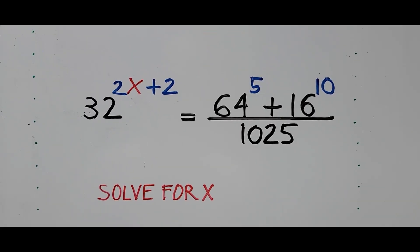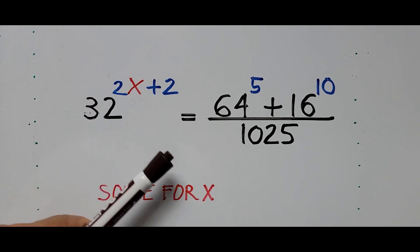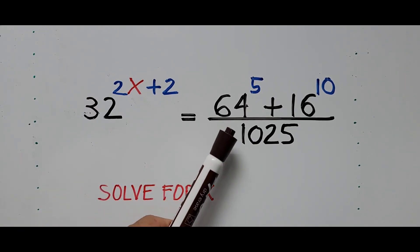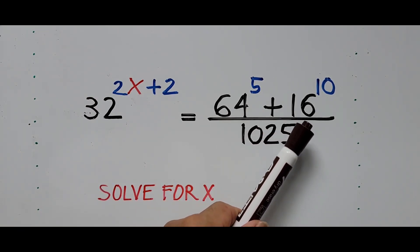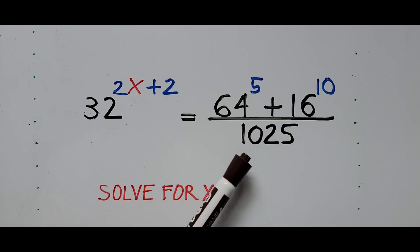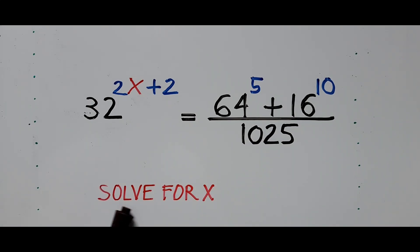Welcome to Cassiano Easy Math. This video is about solving another exponential equation: 32 raised to the 2x plus 2 equals 64 raised to the 5th power, plus 16 raised to the 10th power, divided by 1025. We need to solve for the value of x.